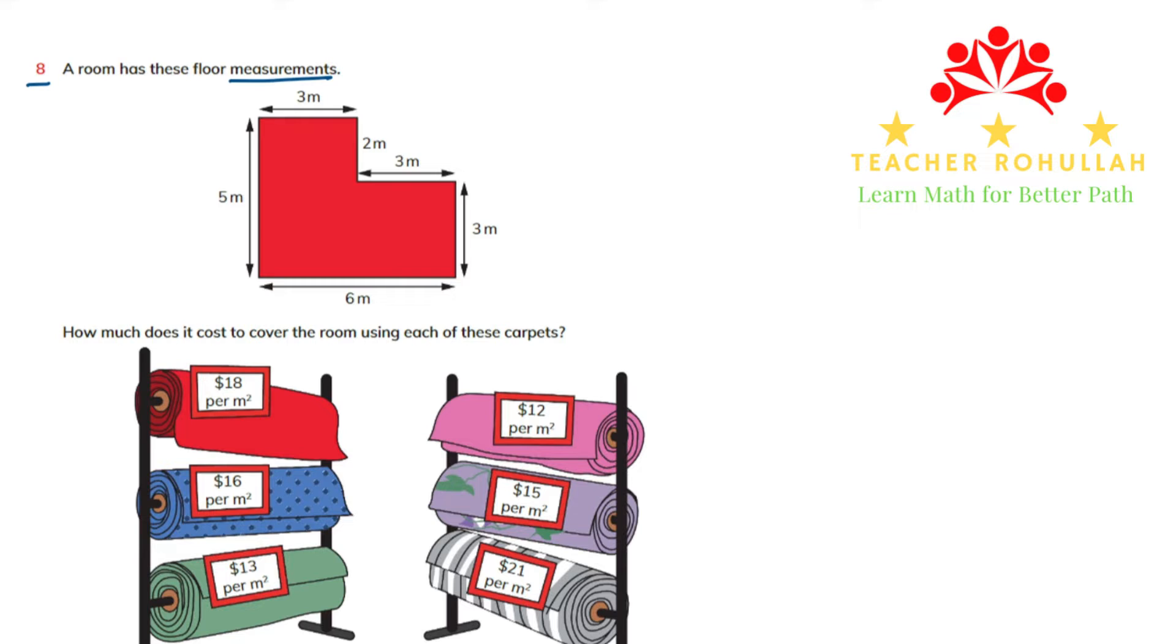This is having a complex shape and we have to use these measurements to buy carpet for this room. So to find out how much it cost to buy each of the carpets we have to find the area of this shape. Because it is a complex shape we have to divide this shape into two square or rectangular shapes.